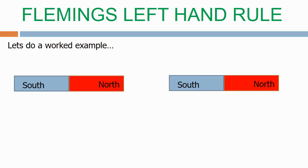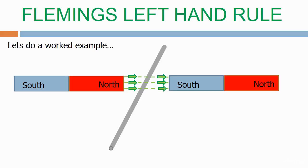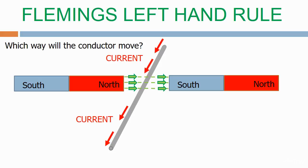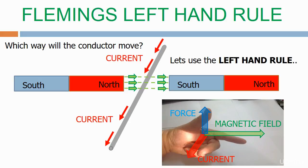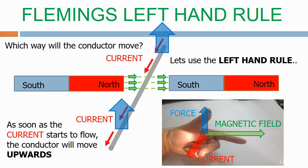Let's do a worked example. Let's place two magnets near to each other — we'll get a magnetic field flowing from north to south. Let's place the conductor inside that magnetic field and pass current through it. The question is: which way will the conductor move? Let's use the left hand rule. Orientate your left hand as shown in the picture. The magnetic field is the first finger and it flows from left to right. The current represents the second finger flowing downwards. The force is the thumb pointing upwards. As soon as the current starts to flow the conductor will therefore move upwards.